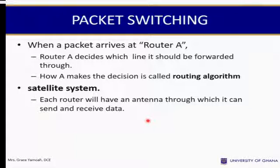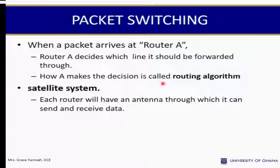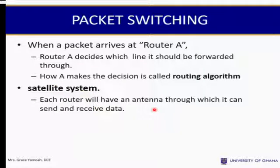When a packet arrives at router A, router A decides which line it should be forwarded through. How A makes this decision is called a routing algorithm. In a satellite system, each router will have an antenna through which it can send and receive data.